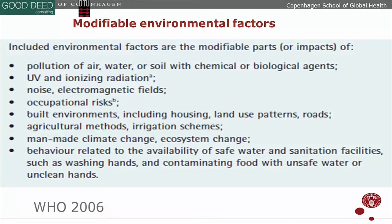The first category is pollution of air, water, soil, chemicals, or biological agents. Some of you have already mentioned sanitation issues, but there's also air pollution, which is rising rapidly in some parts of the world, and water pollution. Then there's UV, noise, occupational risks, and risks related to the built environment — infrastructures, housing, roads, road accidents, traffic injuries. This is a big group of environmental diseases, especially rising in lower-middle-income countries as traffic is growing. Agricultural methods and irrigation schemes also carry lots of disease — we'll come back to that.